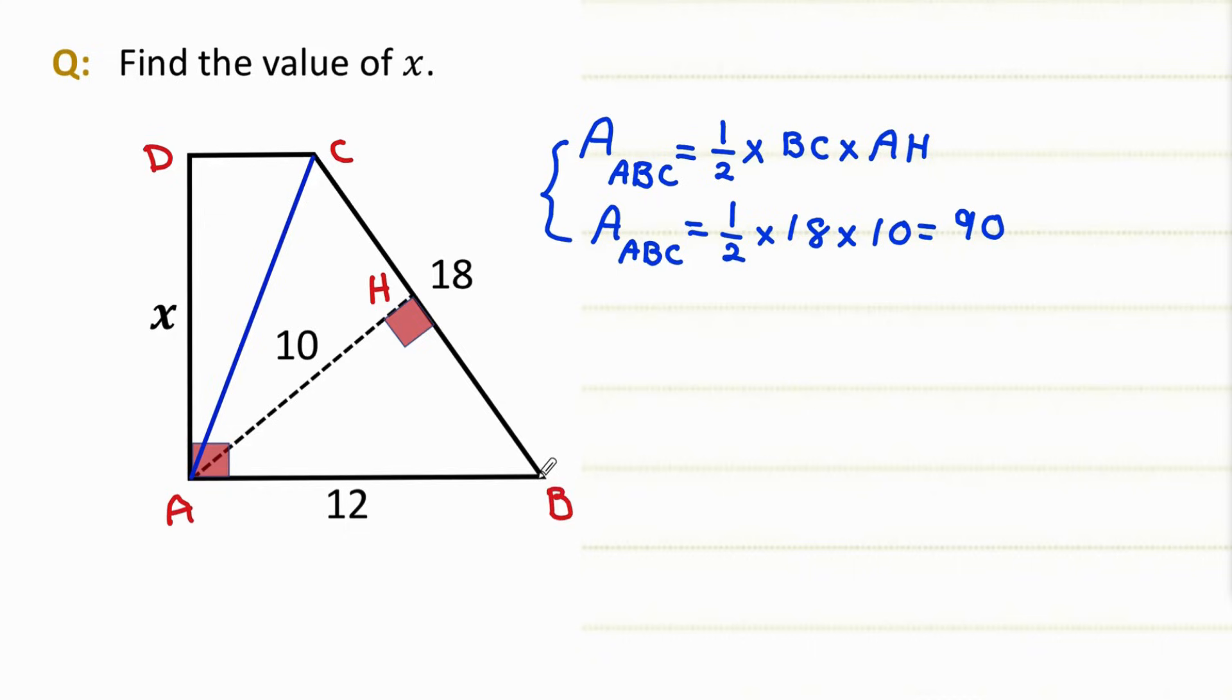Now we consider AB as the base. And the height is a line which connects C to AB perpendicularly. We call this point N.